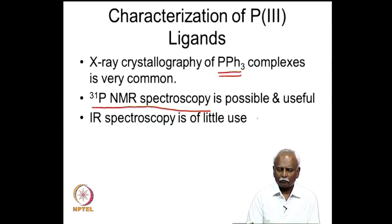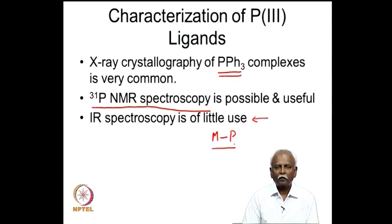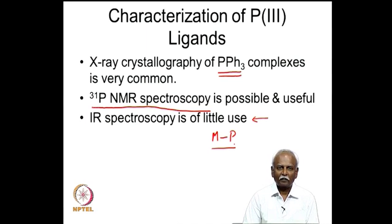Infrared spectroscopy is unfortunately of not much value in this instance because the metal-phosphorous single bonds can be observed in the infrared spectrum only in the very low energy regions like 300 to 400 cm⁻¹, and because this region is quite crowded it is very often not useful as a tool to analyze the P(III) organometallic chemistry.